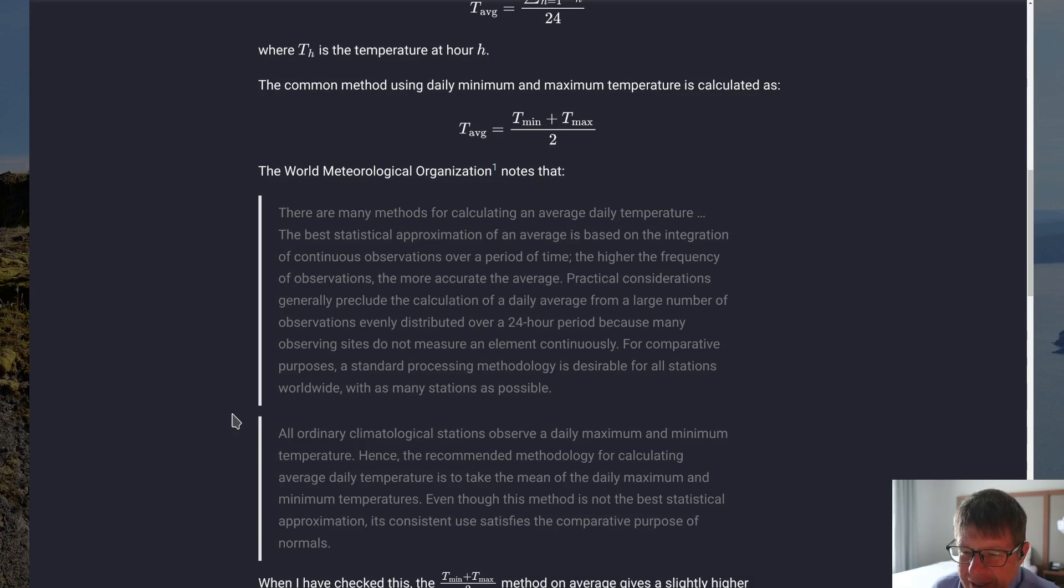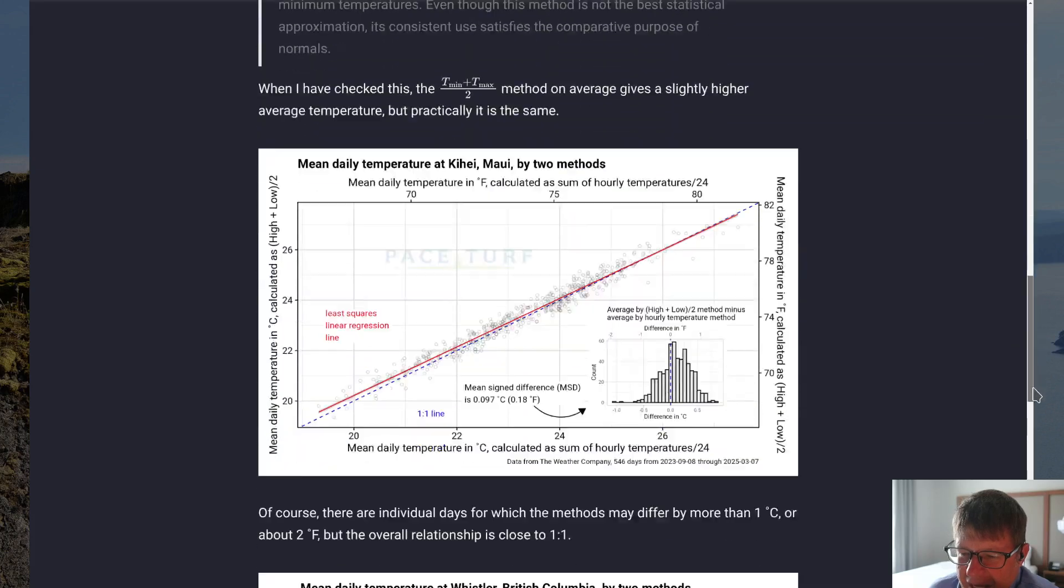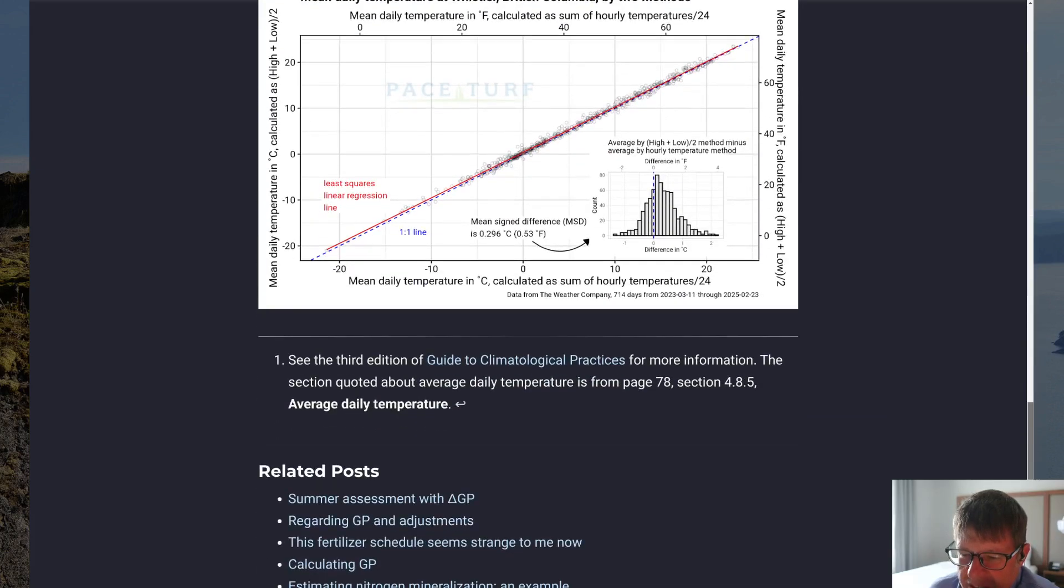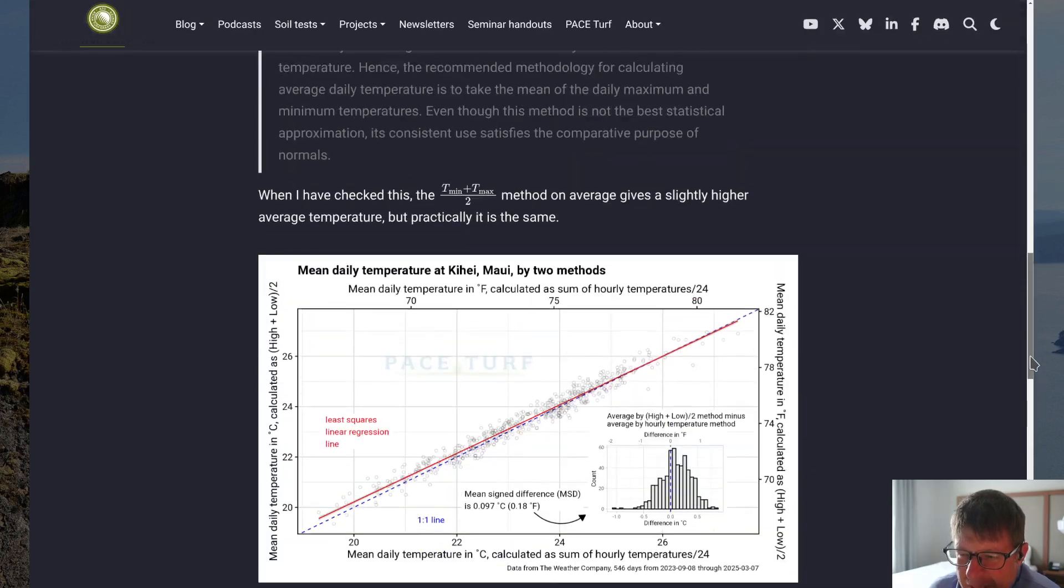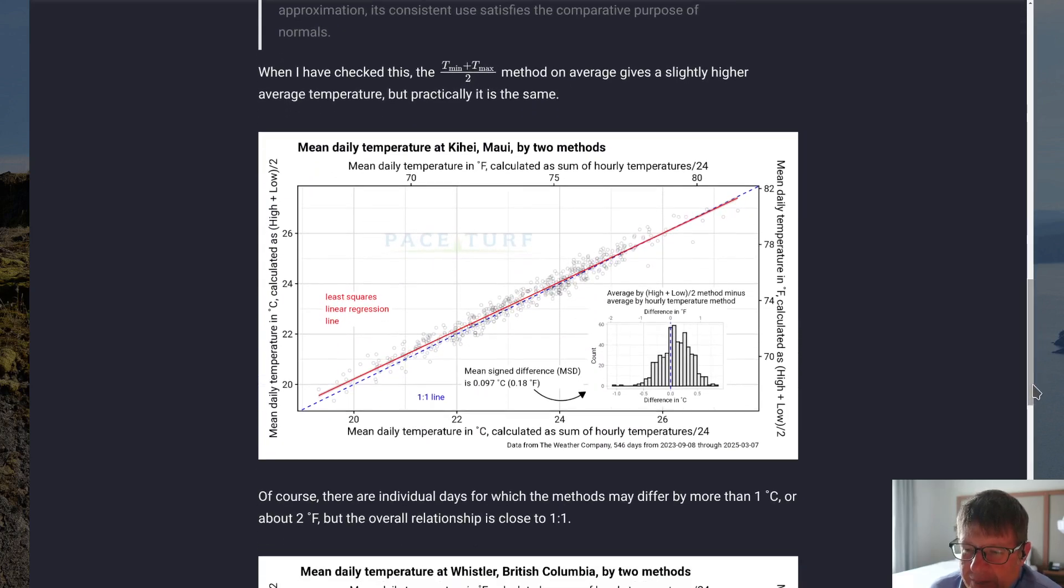And so, this is recommended by the World Meteorological Organization in the case of calculating normal temperatures. And I put a direct link to that in a footnote. This is in their third edition of the book Guide to Climatological Practices. So, it's certainly a valid way to do this, is to take the minimum temperature, add to that the maximum temperature, divide by two. That gives a slightly higher average temperature, but practically it's the same.